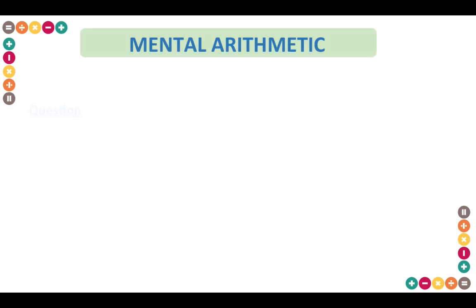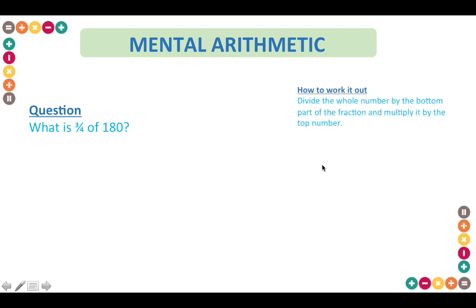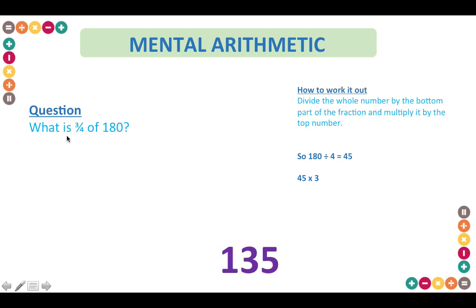Another type of question will be based on mental arithmetic. What is three quarters of 180? For these types of questions you need to know how to work with fractions. A good way to remember this is to divide the whole number by the bottom part of the fraction — which would be four — and then multiply by the top number, which would be three. So 180 divided by four gives you 45, and 45 multiplied by three gives you 135. These questions will become easier the more that you practice them.